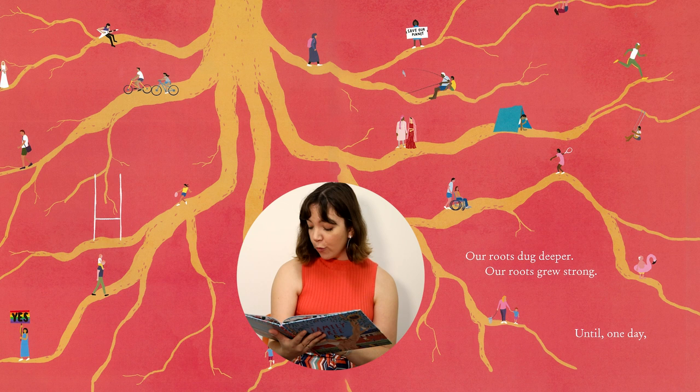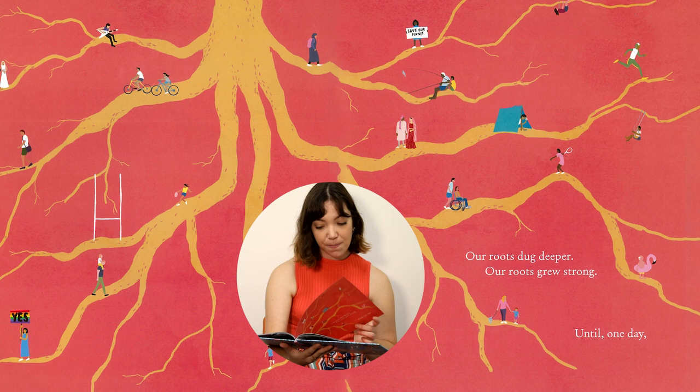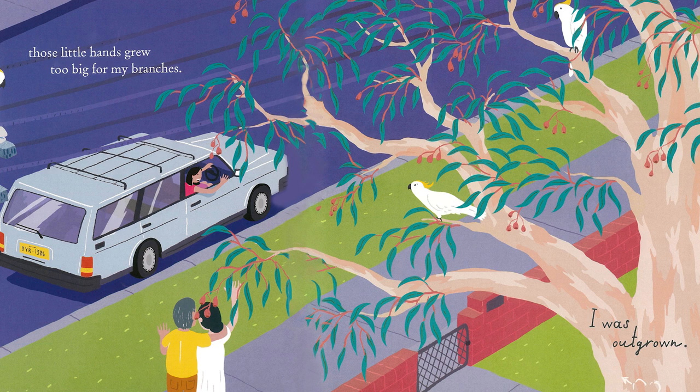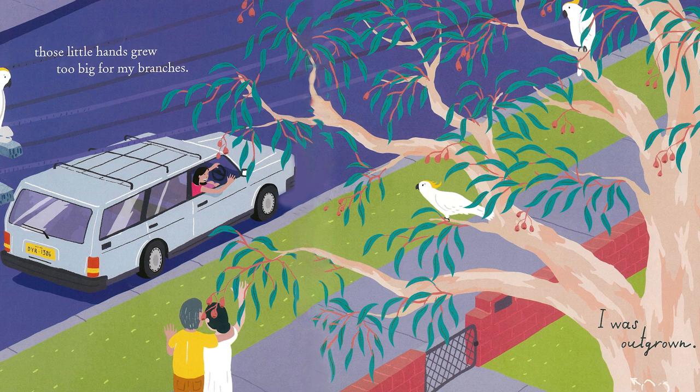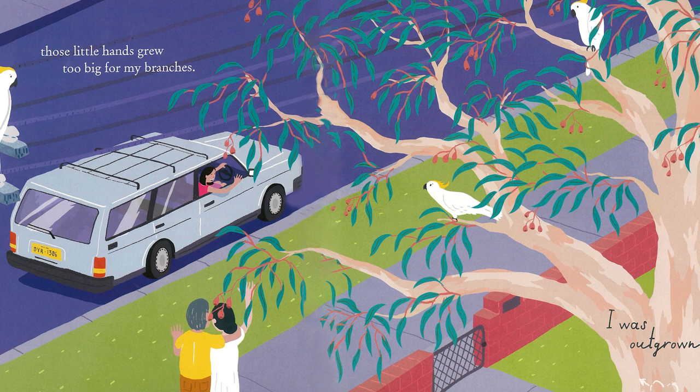Until one day, those little hands grew too big for my branches. I was outgrown. The young girl is now a woman — an adult — and she's leaving. She's leaving the home, the family tree, to go and get some new experiences. I wonder where she will go.